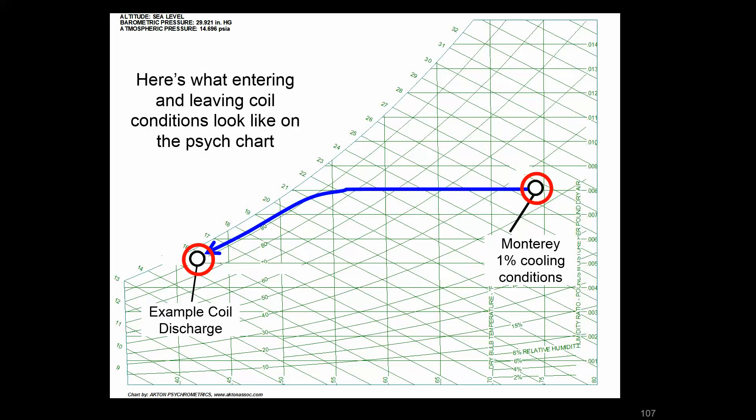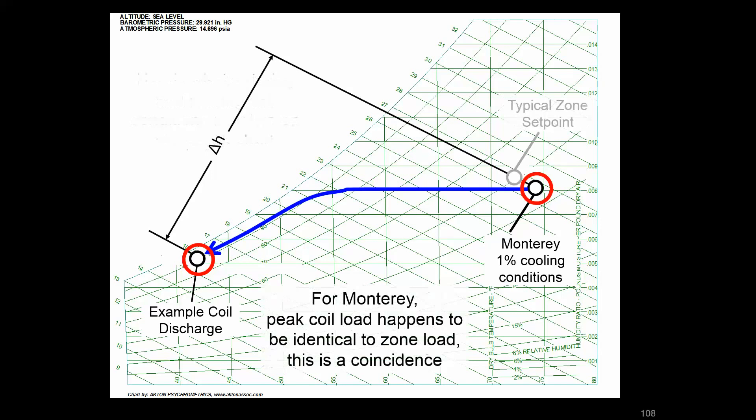So we can really look at a different process on this chart, which is not just the zone load process, but a cooling process. And that's going to be from this outside air condition. In this case, we're looking at Monterey, California's 1% cooling, which is a fairly mild 74 degrees at a little over 40% relative humidity. And we're going to look at what it takes to cool that down to the coil discharge temperature. So accounting for some bypass coil factor, what that delta H is that's going to be between the outside air and what's coming out of the coil. So the input to the coil and the output.